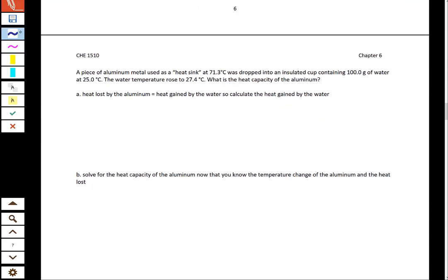So in this problem we have a piece of aluminum and it's used as a heat sink. The aluminum is 71.3 degrees and it's dropped into a cup of water with 100 grams of water and that water is 25 degrees Celsius. Then at the end the temperature rises to 27.4. It's asking what the heat capacity is for the aluminum.